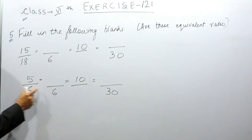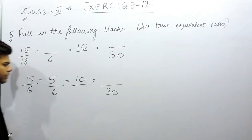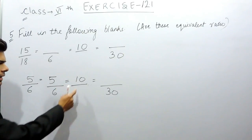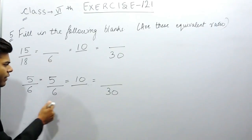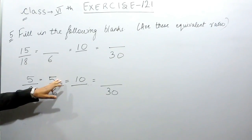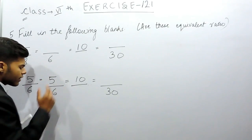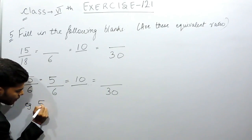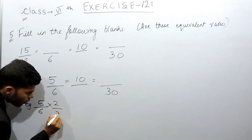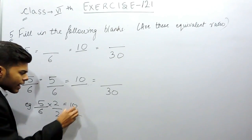Now, these two are equal, so if this is six and this is also six, that means this should also be five. Now we'll compare these two — this is ten. It will come when we multiply this five with two. So if we multiply two with five, we also have to multiply two with six, so there is no difference. For example, five upon six is the same as ten upon twelve — we can cancel this out.